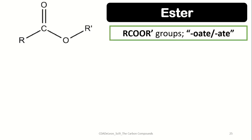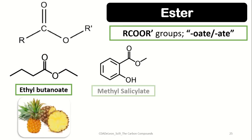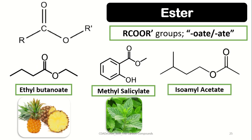Next we have esters. Esters are functional groups found between two hydrocarbons, made up of a carbonyl group — a carbon with an oxygen double-bonded on it — plus an additional oxygen atom. Most carbon compounds containing esters are used as fruit flavorings and natural scents. Examples include ethyl butanoate, the natural scent of pineapple; methyl salicylate, the natural scent of mint; and isoamyl acetate, the natural scent of bananas.